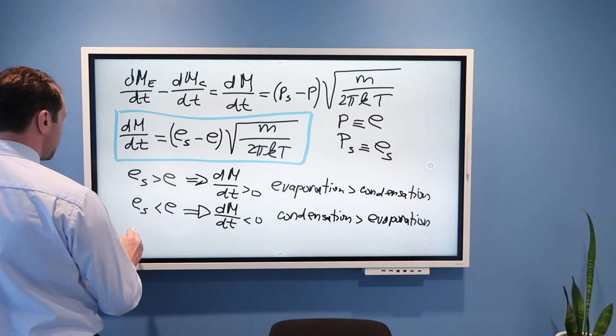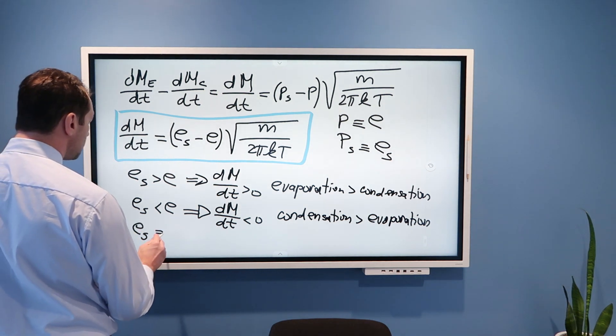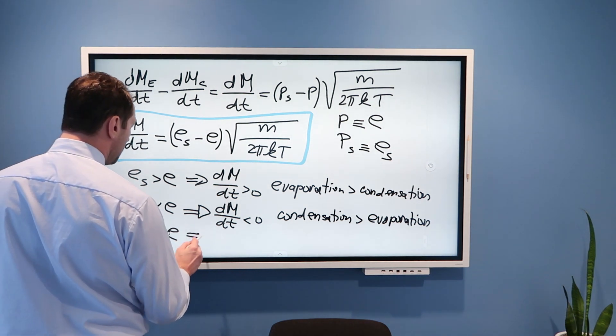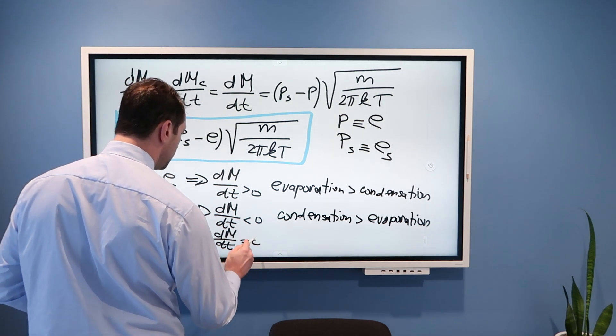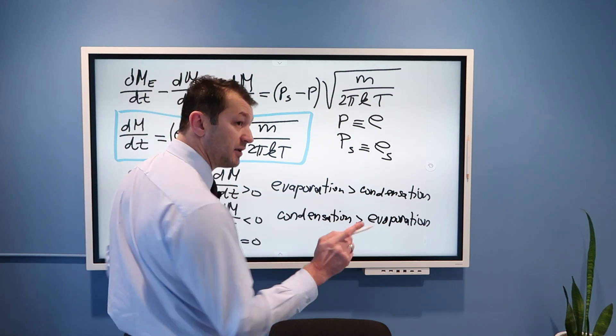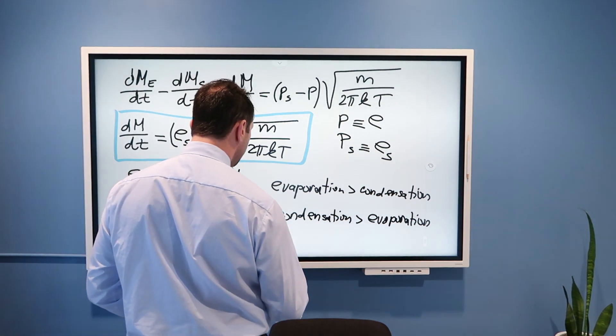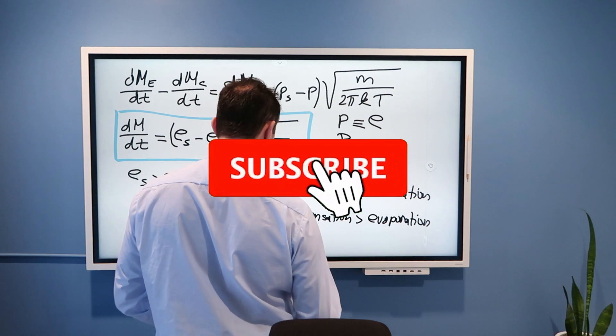What does make sense is if ES is equal E, that means that dm/dt is equal 0, and that means equilibrium, which we defined in one of my previous videos.